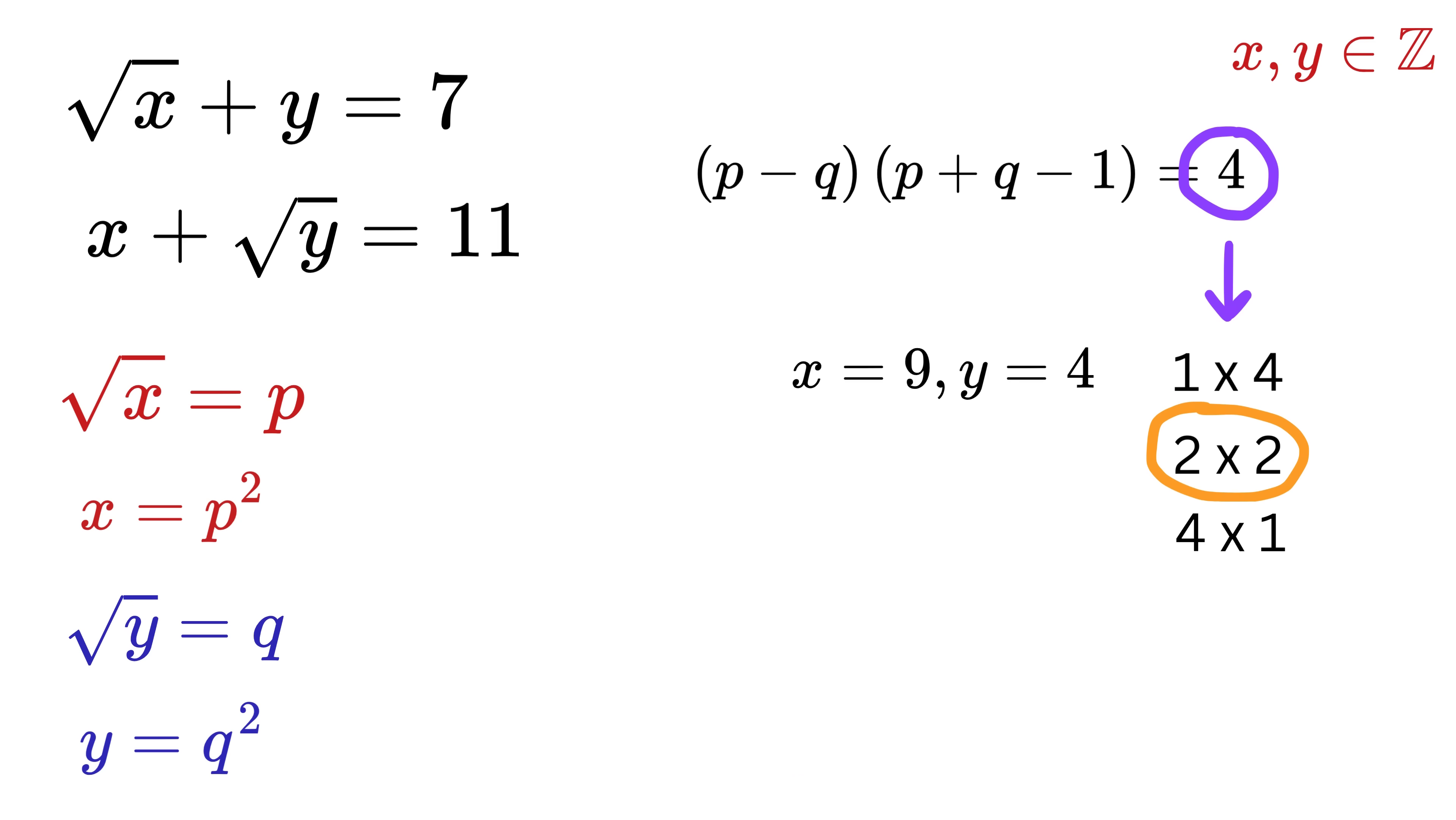Great! Then consider this part where both p minus q and p plus q minus 1 are 2. This makes p plus q equals 3. Add both of them to get 2p equals 5, or p equals 5/2, which is not possible because x is a positive integer.